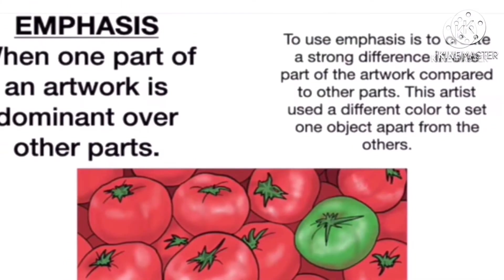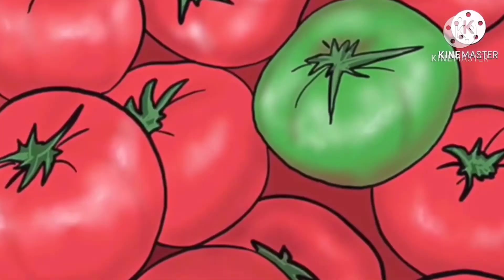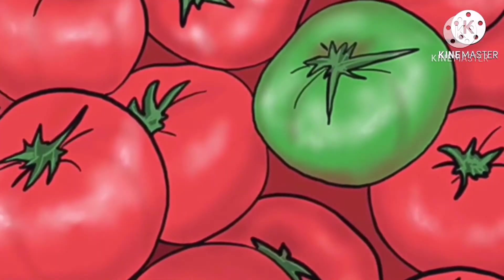Number two is emphasis. Emphasis is when one part of an artwork is dominant over other parts. To use emphasis is to create a strong difference in one part of the artwork compared to the other parts. This artist uses a different color to set one object apart from the others.